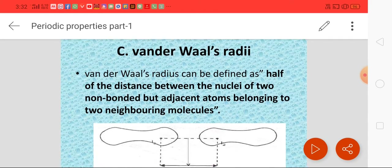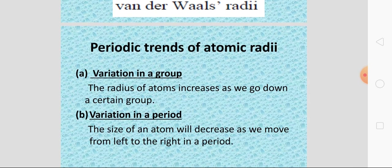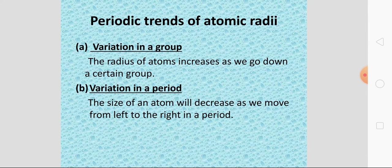Van der Waals radius can be defined as half of the distance between the nuclei of two non-bonded but adjacent atoms belonging to two neighboring molecules. These neighboring molecules are adjacent, and while the atoms are close to each other, they are non-bonded because they belong to two different molecules. Half of the distance between such adjacent atoms gives the van der Waals radius.